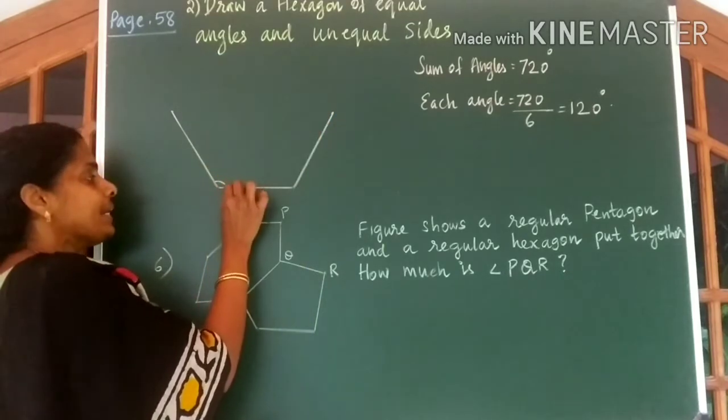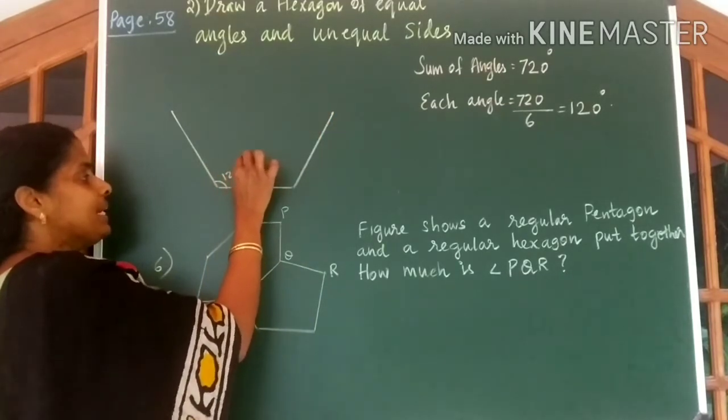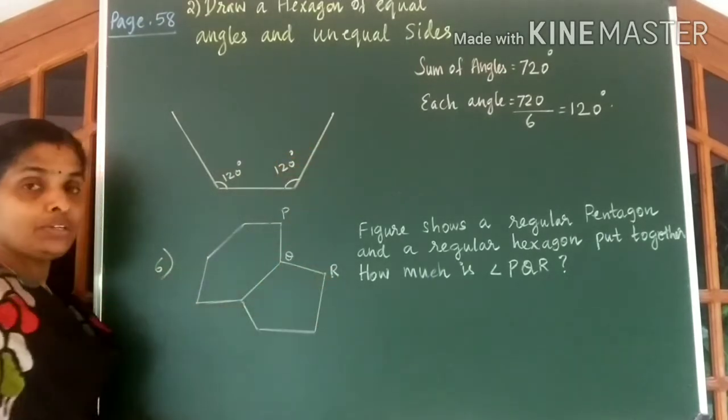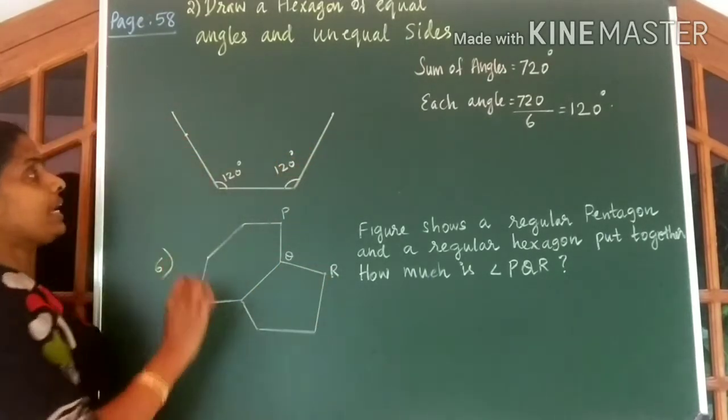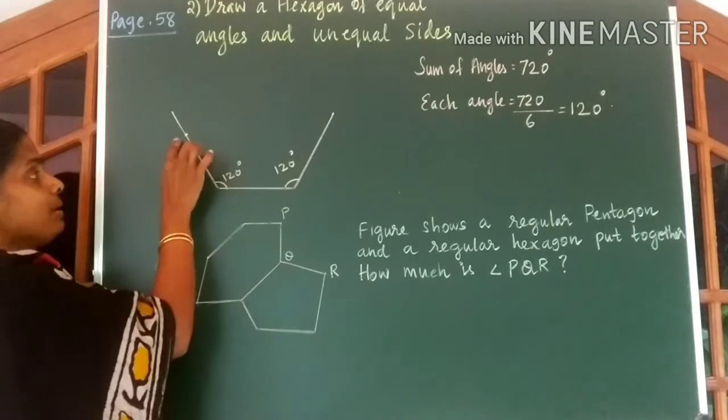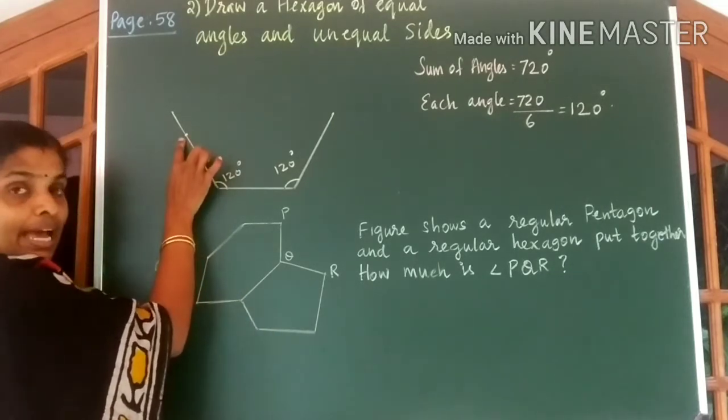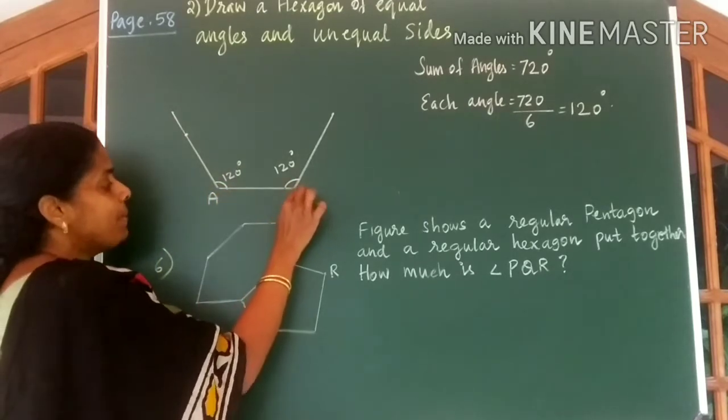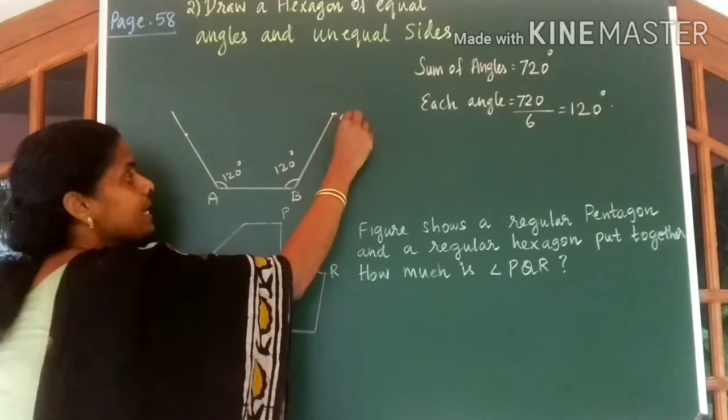Now this angle is 120 degrees and this angle is also equal to 120 degrees. Now we take a point over here and measure 120 degrees at this point. Let us name this as A, B. Let us take a point C.